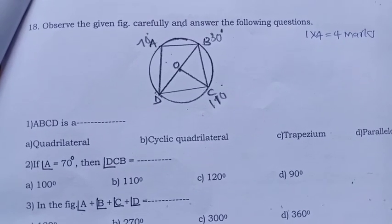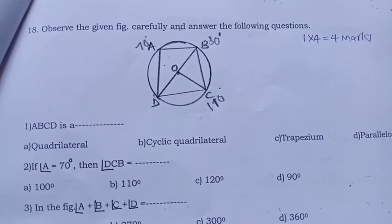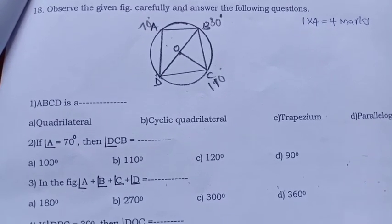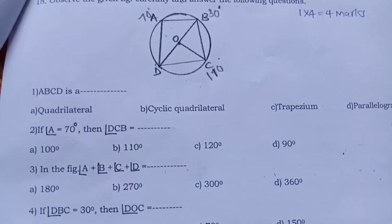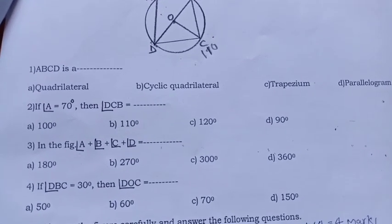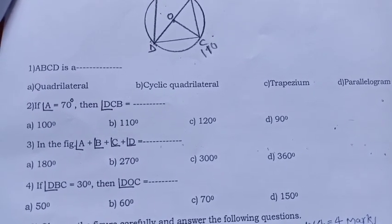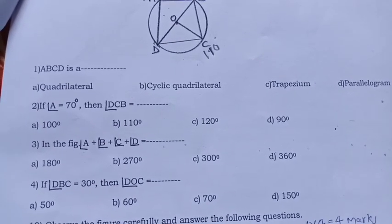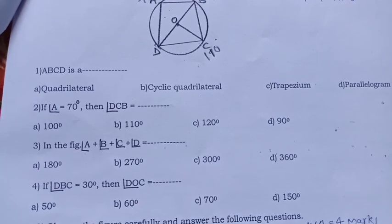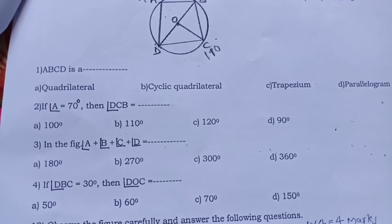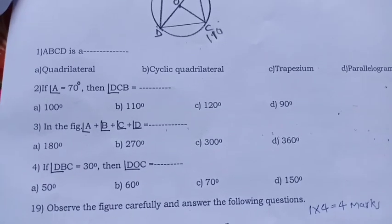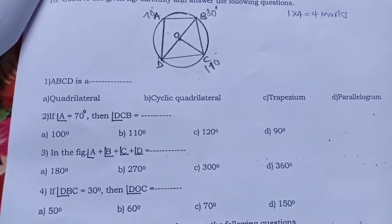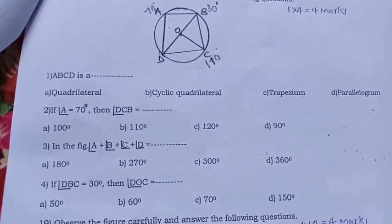Observe the given figure carefully and answer the following questions. Here also four questions each carries one mark. ABCD is a cyclic quadrilateral, trapezium, parallelogram. If angle A equal to 70, then angle DCB: 100, 110, 120, 90. In the figure, angle A plus angle B, angle C, angle D equal to 180, 270, 300, 360. If angle DBC equal to 30 degree, then angle DOC: 50, 60, 70, 150.